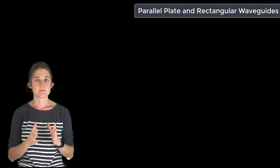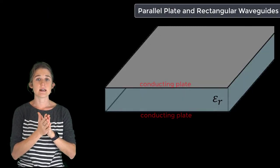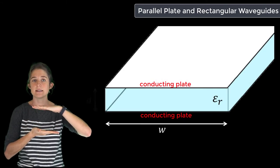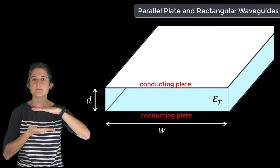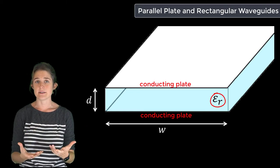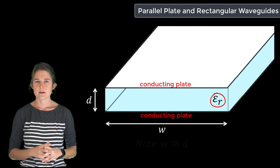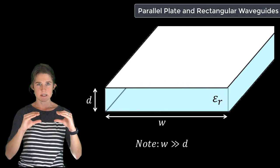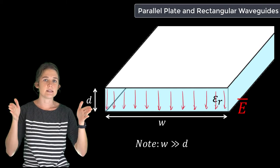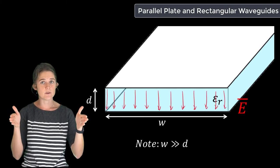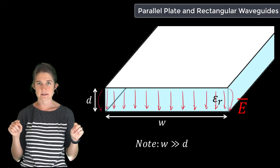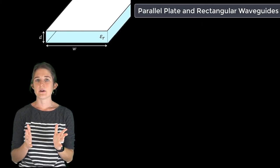A parallel plate waveguide is composed of two conducting plates of the same width w, separated by a distance d. The space between the plates is filled with a dielectric having relative permittivity epsilon r. The analysis uses the assumption that w is much greater than d, so that the majority of the fields may safely be assumed to be contained within the dielectric with minimal fringing on the left and right sides.